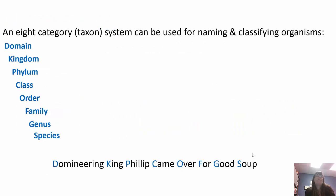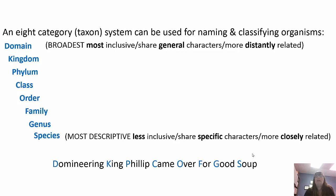The taxon system used for naming is: domain, kingdom, phylum, class, order, family, genus, species. Domain is the largest and most inclusive category; species is the narrowest and least inclusive. You can use a mnemonic to remember it: 'Domineering King Philip came over for good soup,' or 'Do kings play chess on fuzzy green stools?' You go from most inclusive to less inclusive, from general characteristics to specific, and from more distant to more closely related.